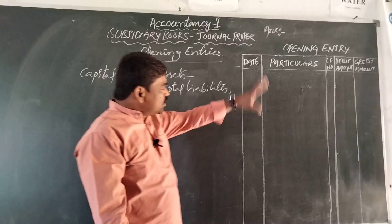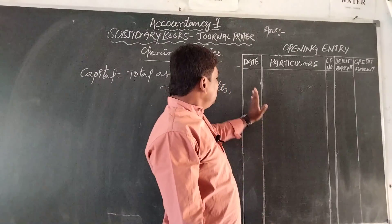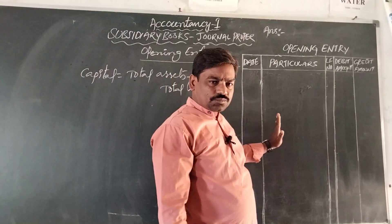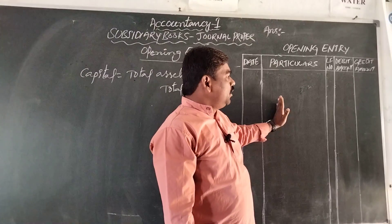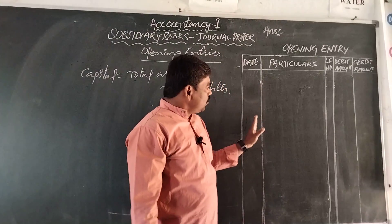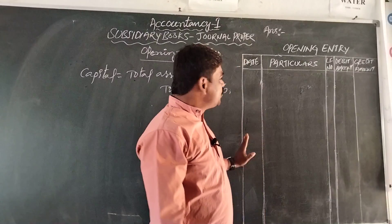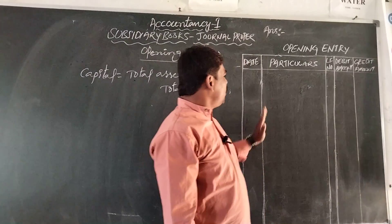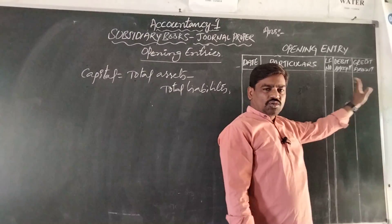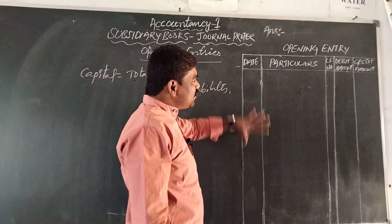Now, if you see the pro forma of an opening entry, it is similar to the journal. There are a total of five columns: Date, Particulars, LF number, Debit Amount, and Credit Amount. In this entry, you first write the date, then list all assets. For example: Cash Account — debit, Debtors Account — debit, Stock Account — debit, Bank Account — debit.